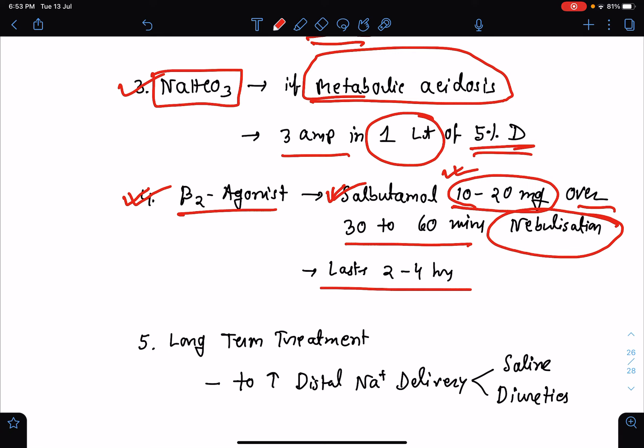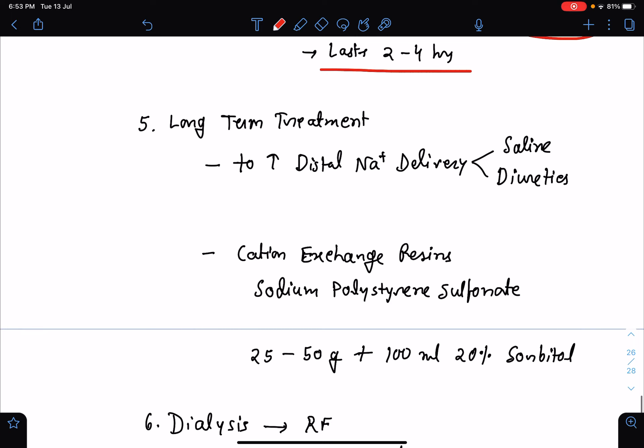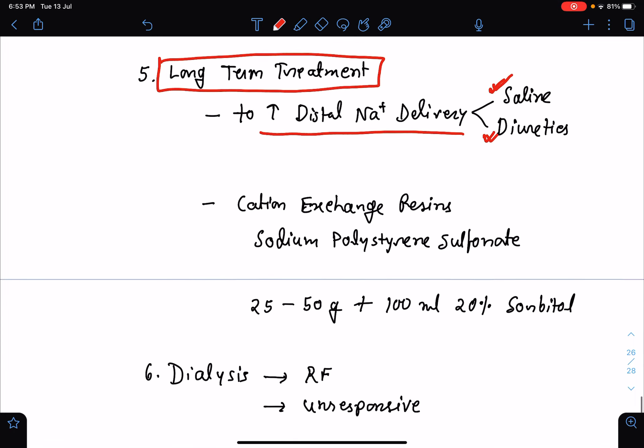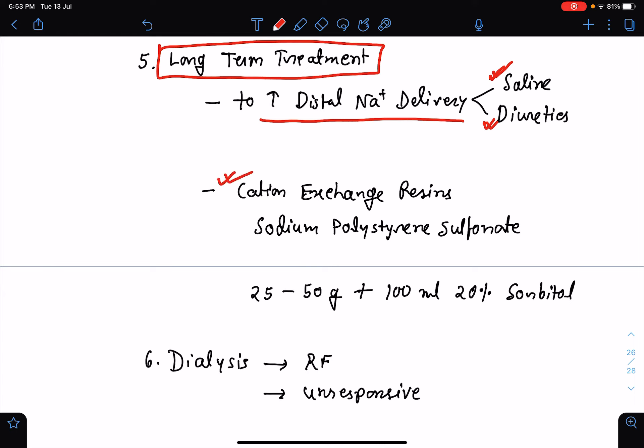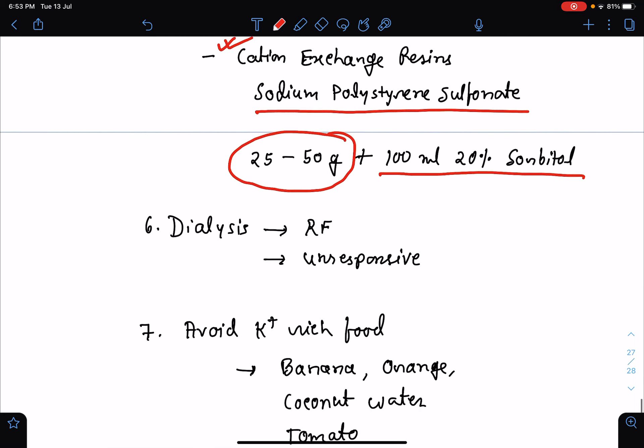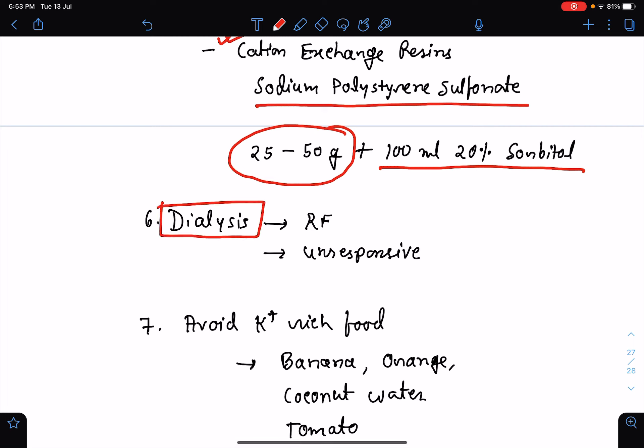If we talk about the long-term treatment, we need to increase the distal delivery of sodium. Distal sodium delivery can be increased by infusion of saline or by use of diuretics. There is something known as cation exchange resins, for example, sodium polystyrene sulfonate. It will exchange sodium in place of potassium in the GIT. The dosing is around 25 to 50 gram which should be given with 100 ml of 20% sorbitol to prevent constipation. Finally, dialysis may be required in patients with severe renal failure or if the patient is unresponsive to other conservative management.